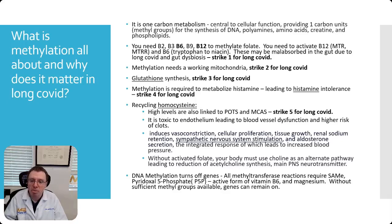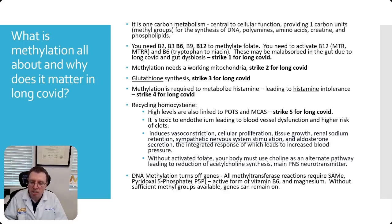Strike two is that methylation happens inside mitochondria, as I said. So you need a working mitochondria unit — if there's a dysfunction, you will not be able to methylate. Methylation eventually produces glutathione from homocysteine, and this is strike three for long COVID. Glutathione is very, very important as a reduction of cellular stress — it works in the mitochondria, and its purpose is to get rid of reactive oxygen species.